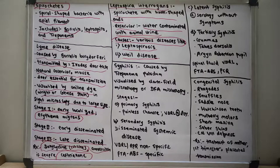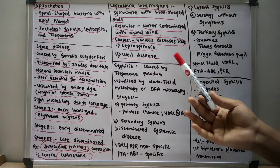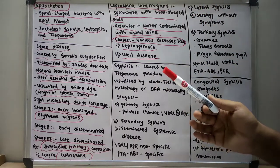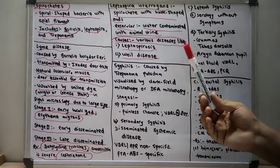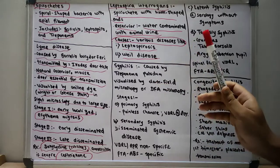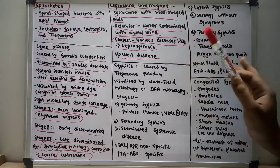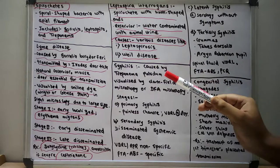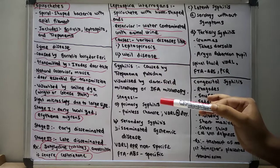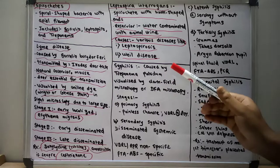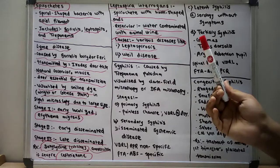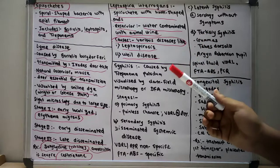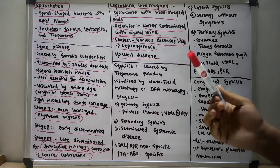Leptospirosis presents like a flu-like illness and has myalgia. Classically there is calf tenderness, jaundice, photophobia with conjunctival suffusion — meaning erythema without exudates. It is prevalent among farm workers and in the tropics, especially in Hawaii.